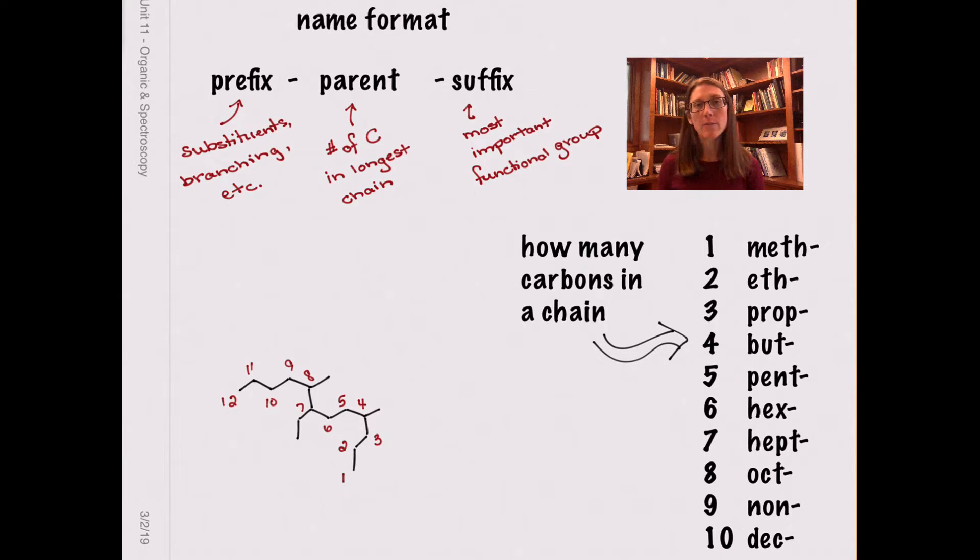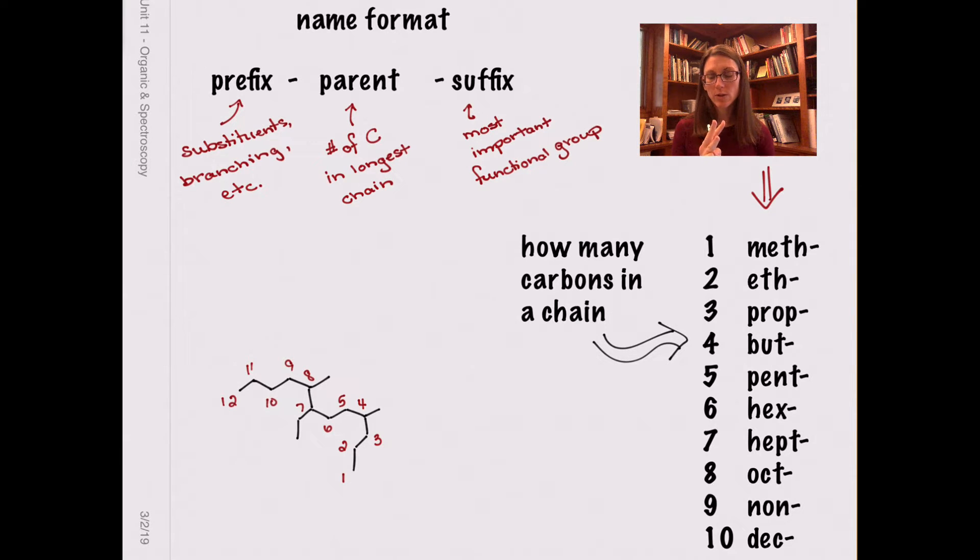When we want to tell someone how many carbons are in your longest carbon chain, we're going to use a core name, and these names you must memorize. If there's one carbon, it is meth. Two is eth, three is prop, four is but, five is pent, six is hex, seven is hept, eight is oct, nine is non, and ten is dec. Yes, there's numbers for 11 and 12 and so on, but I only need you to know one through ten. This is going to tell us how many carbons are in our longest carbon chain.